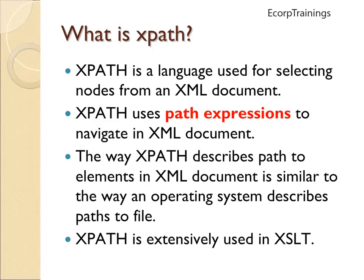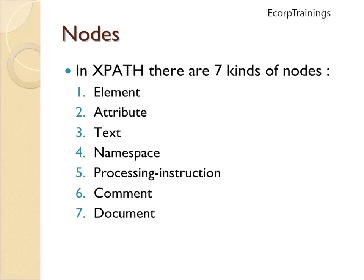XPath is extensively used in XSLT. In XPath, we have seven kinds of nodes: element, attribute, text, namespace, processing instruction, comment, and document.